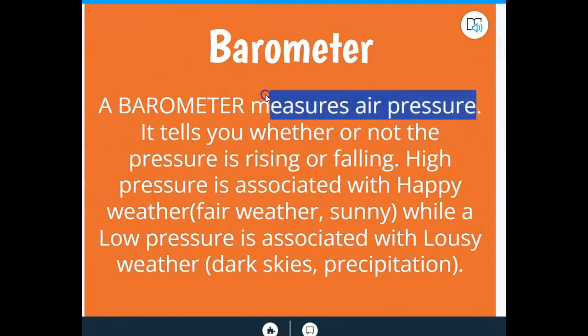Again, it measures the air pressure. We have high pressure, our quote-unquote happy weather, clear, cool, and sunny. We have the low pressure, that big red L on the weather map. That is going to stand for lousy weather. That's going to be dark skies and precipitation. Lots of times, that's going to be storms.